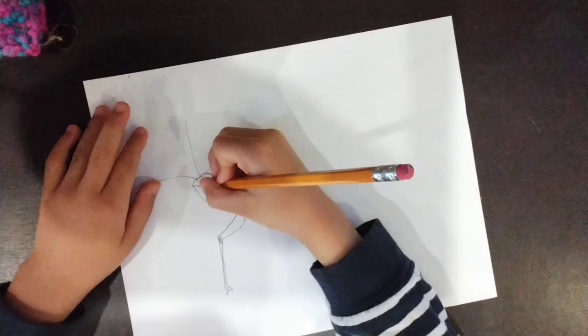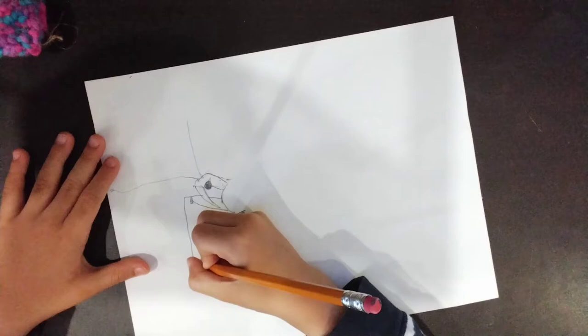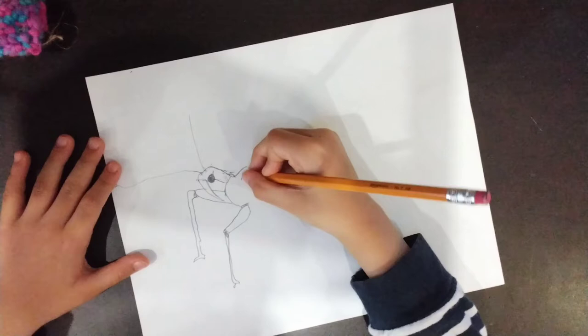Right now I am drawing the other leg of the assassin bug. These legs are for trapping prey in their grip.